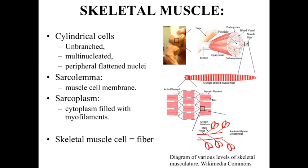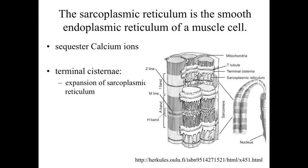With skeletal muscle, it's important to recognize that a single skeletal muscle cell is also referred to as a muscle fiber in many textbooks. Looking in more detail at what's going on within the cell, the sarcoplasmic reticulum is the endoplasmic reticulum of a muscle cell. The sarcoplasmic reticulum is important because it's involved with sequestering and storing calcium ions. Extensions of the sarcoplasmic reticulum called the terminal cisternae are located at the boundary between the I-band and the A-band, and they're important for both the storage of calcium and the release of calcium to trigger muscle contraction.